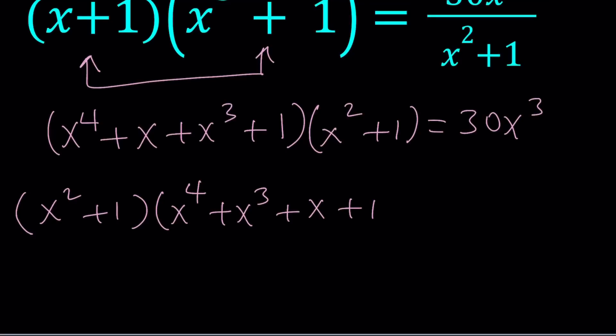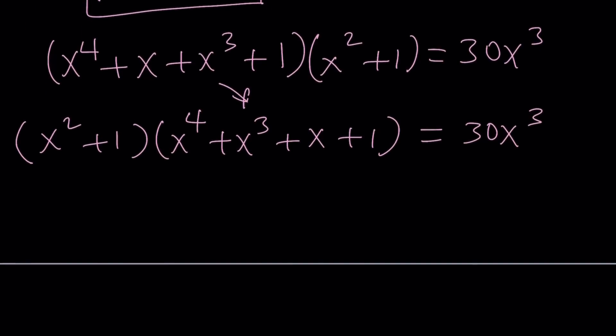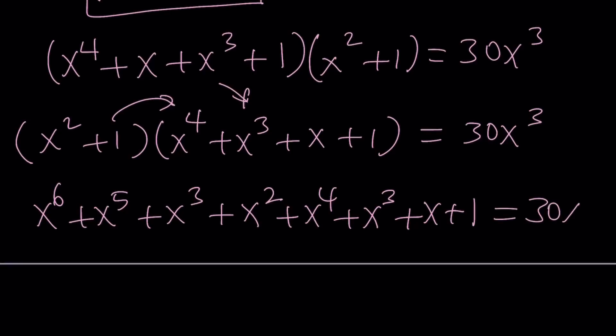So let me write it like this. At the same time, I'm kind of arranging the terms here, putting that expression in standard form. And now I can go ahead and distribute the x squared first. That's going to give me x to the 6th plus x to the 5th plus x cubed plus x squared. And then I'm going to distribute the 1 plus x to the 4th plus x cubed plus x plus 1. And finally, it's equal to 30x cubed. Now obviously we can go ahead and bring the 30x cubed and subtract it from x cubed and get an equation.